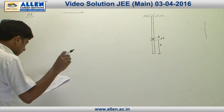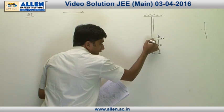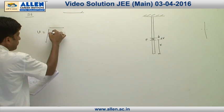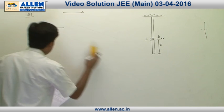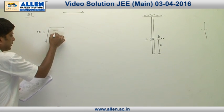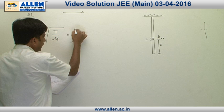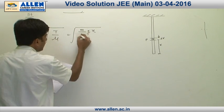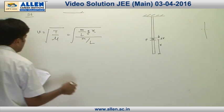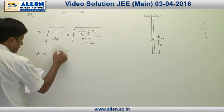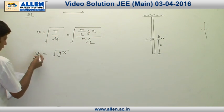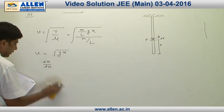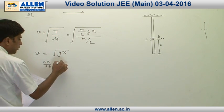The velocity of the pulse at point P can be written as v equals root of T by mu. We can directly put the value of T and mu: T is (m/l)gx and mu is m/l. From here we get v equals root of gx. Since v equals dx/dt, we have dx/dt equals root gx.